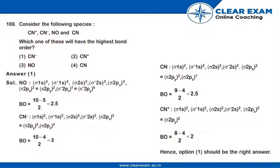Question 169 asks: Consider the following species - CN positive, CN negative, NO and CN. Which one of these will have the highest bond order?